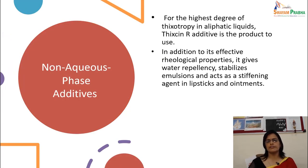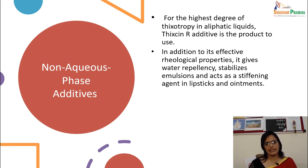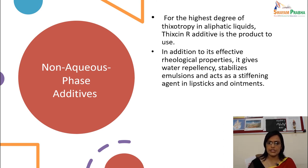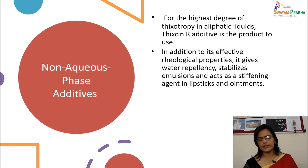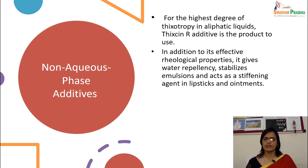For a high degree of thixotropy in aliphatic liquids, Thixin-R additive is the product to use. In addition to its effective rheological properties, it gives water repellency, stabilizes emulsions, and acts as a stiffening agent in lipstick and ointment.